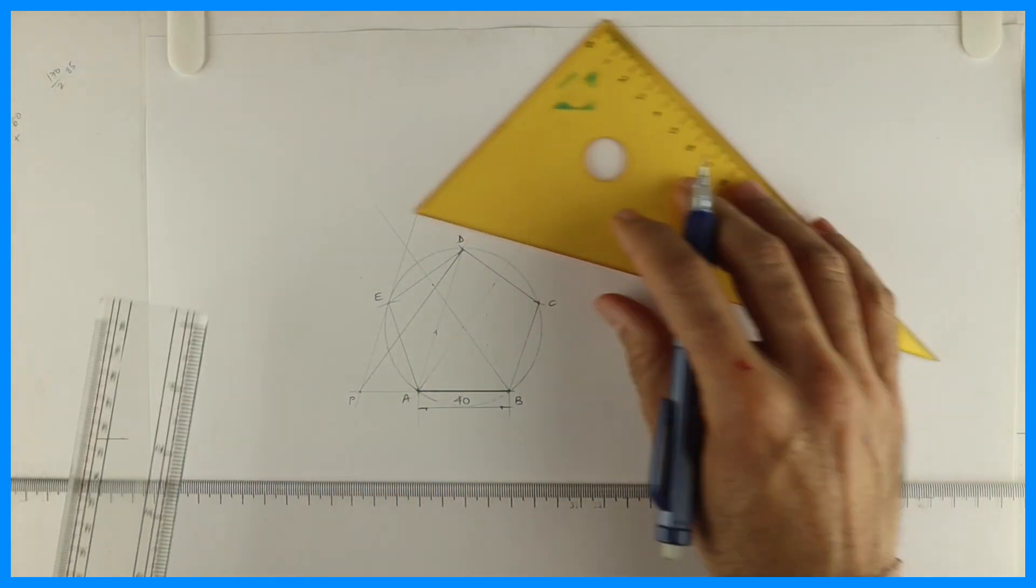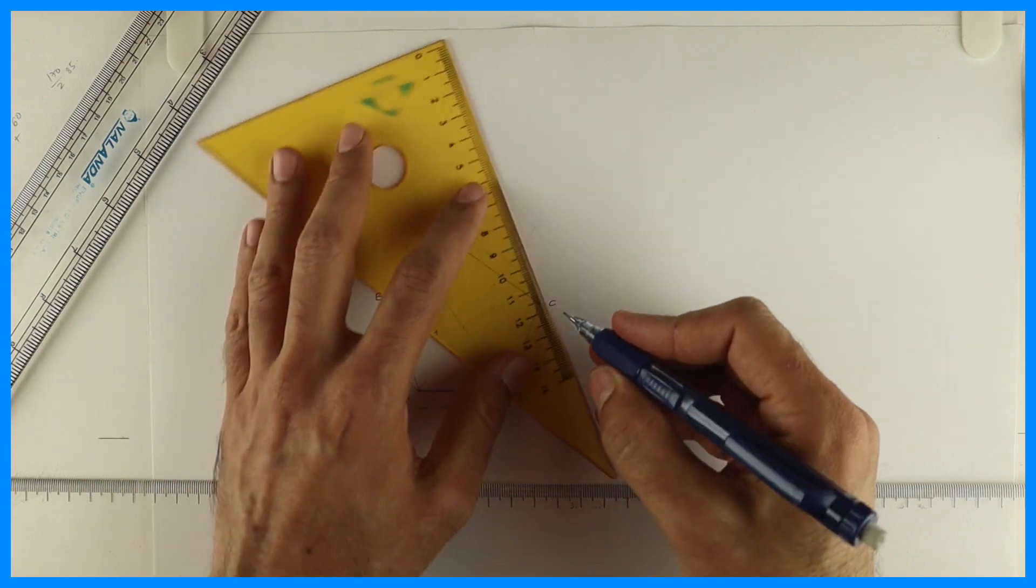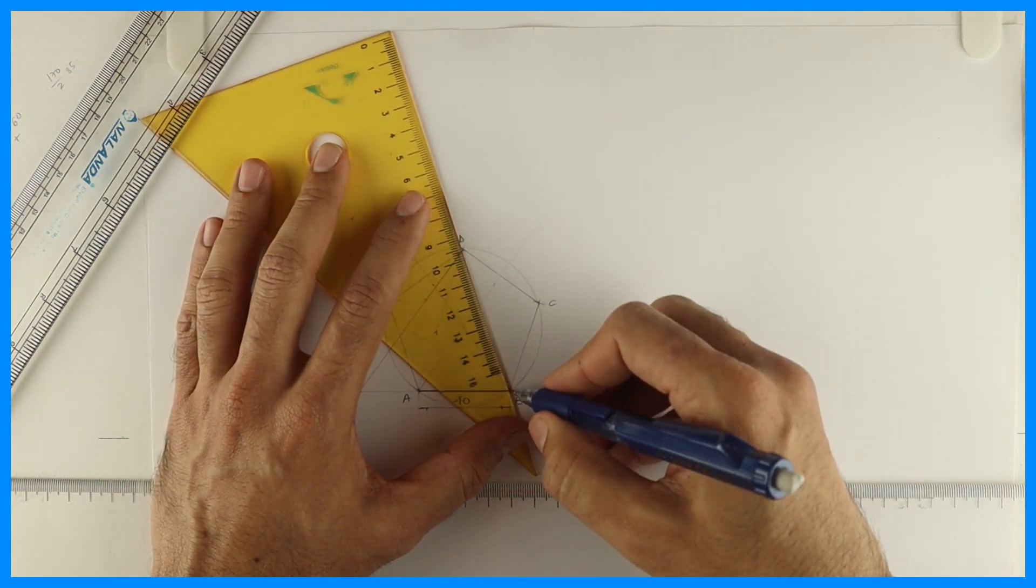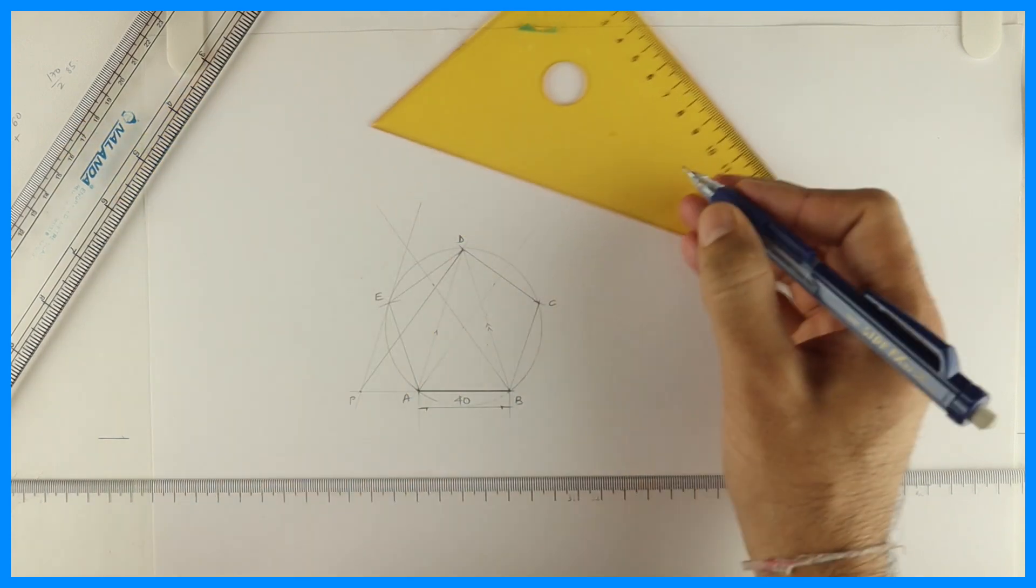So we have converted one triangle into another triangle. Now see, again we'll convert this triangle BCD, see this, now draw parallel.